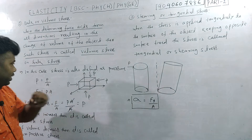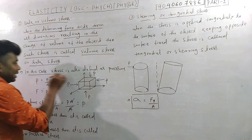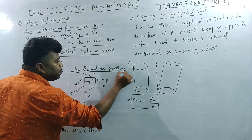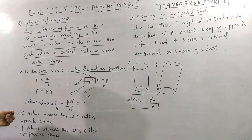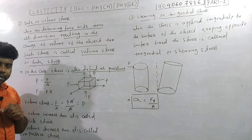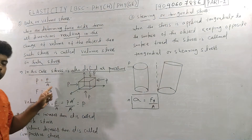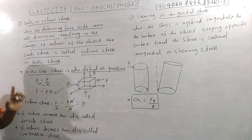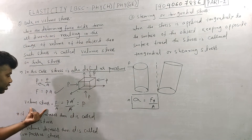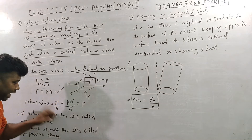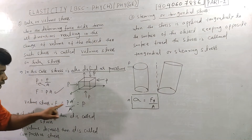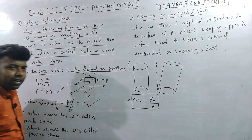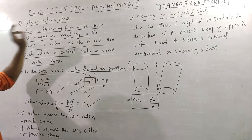In this case, volume stress is also defined as pressure. Pressure is force per unit area. If F equals P times A, then stress sigma equals F by A equals P. So the pressure is the stress in the case of volume stress.